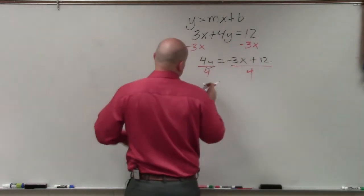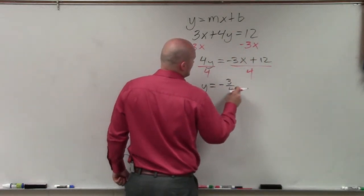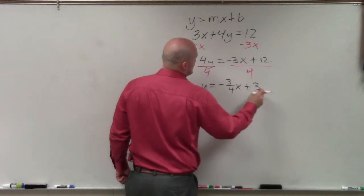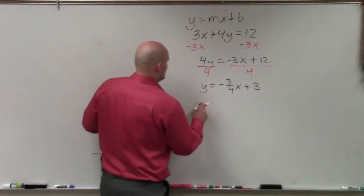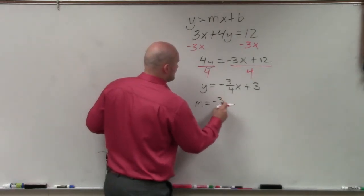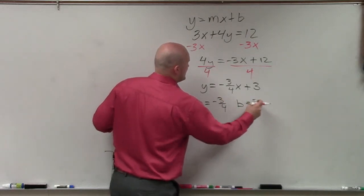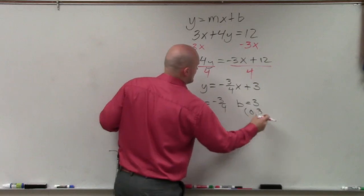So my final answer would be y equals negative 3/4x plus 3 because you've got to divide the 4 into both of those. Therefore, you can determine m is negative 3/4 and b equals 3 or 0 comma 3.